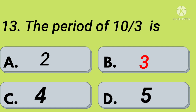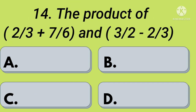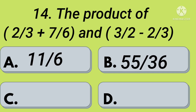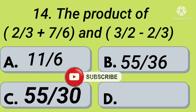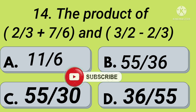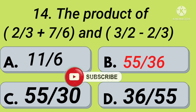Fourteenth question: the product of 2 by 3 plus 7 by 6 and 3 by 2 minus 2 by 3 is — option A: 11 by 6, option B: 15 by 36, option C: 55 by 30, option D: 36 by 55. Your time starts now. Right, option B: 55 by 36.